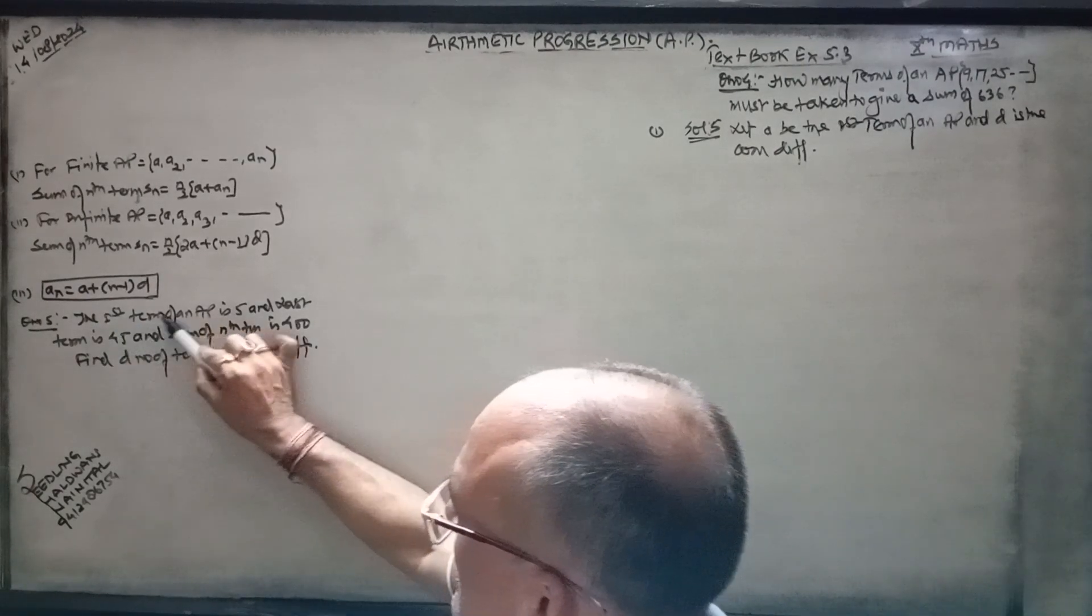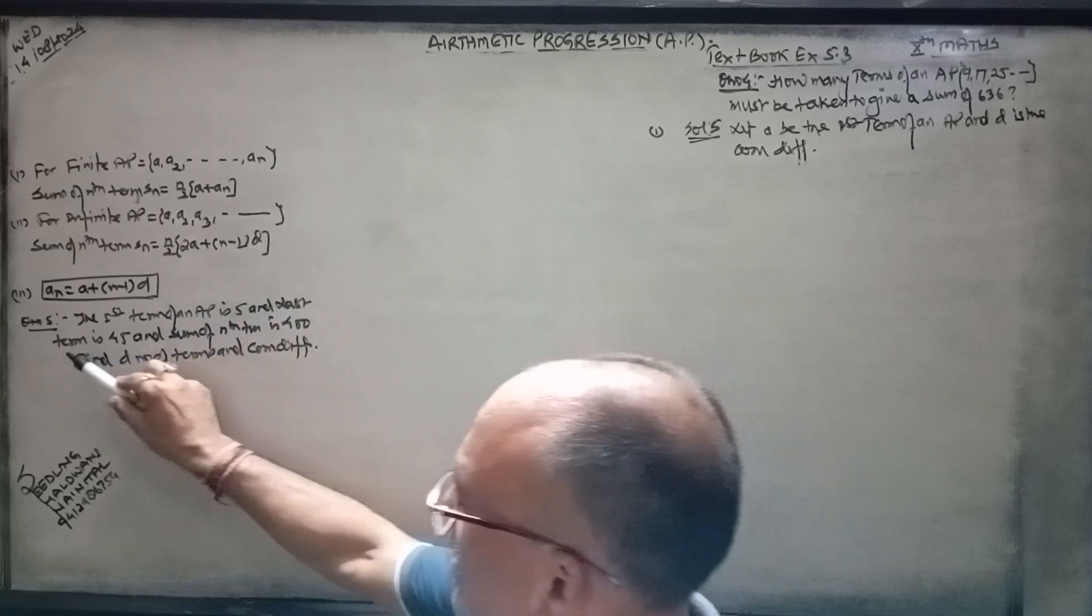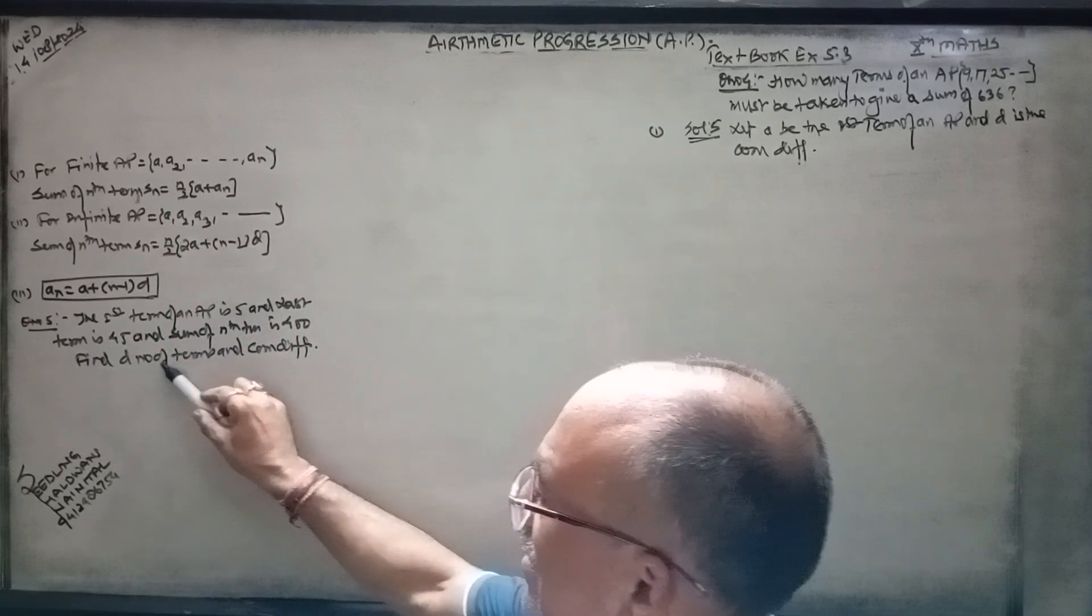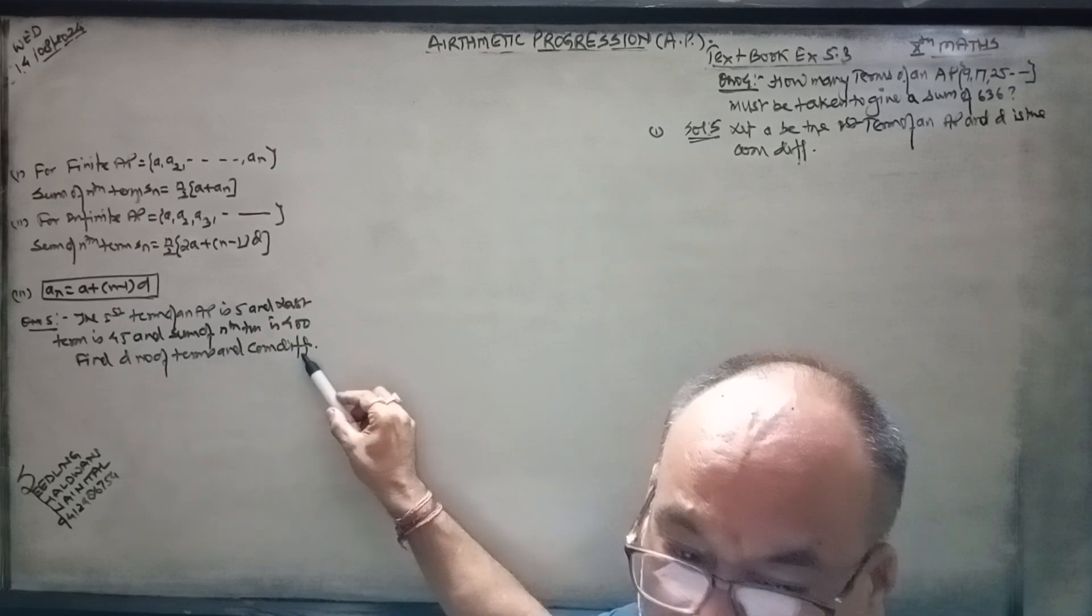Question number 5: The first term of an AP is 5, the last term is 45, and the sum of nth term is 400. Find the number of terms and common difference.